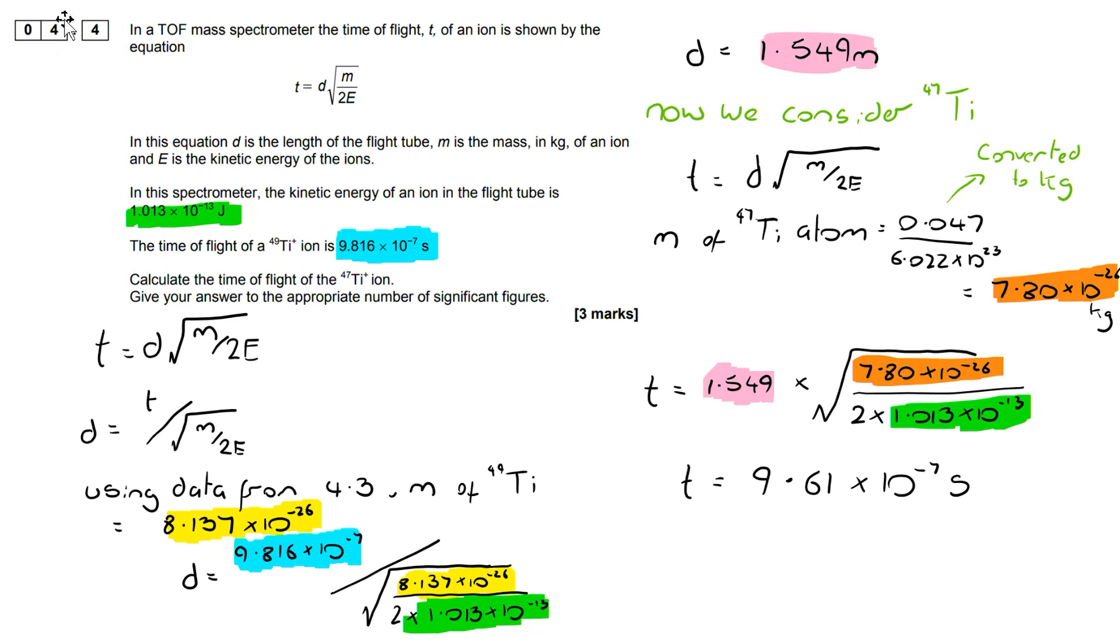So I've now got all of the components that I need to work out the time of flight and we can see here that that comes out as 9.61 × 10^-7 seconds.